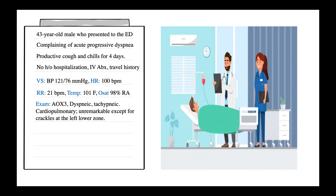Pulmonary exam was significant for crackles at the left lower zone. Otherwise, his exam was normal. On presentation, blood workup was obtained. CBC was remarkable for a white blood cell count of 13.7, but he wasn't anemic, there was no thrombocytopenia, and his hematocrit was normal.